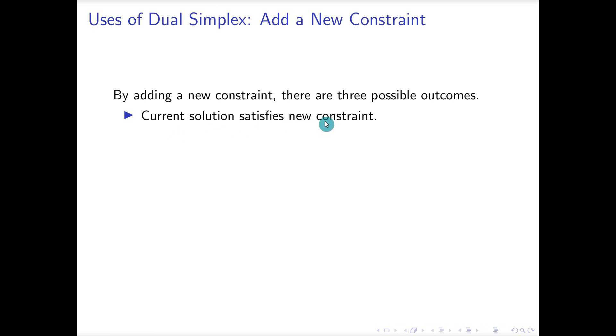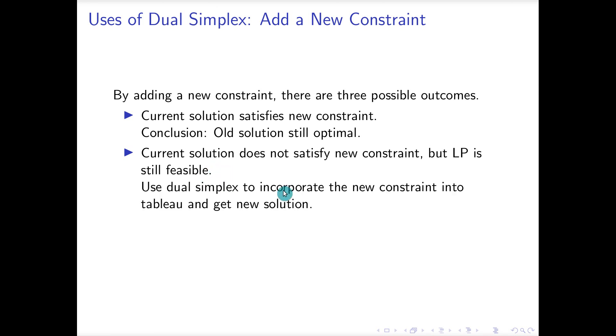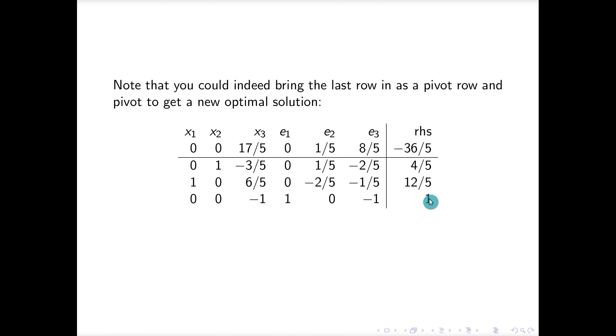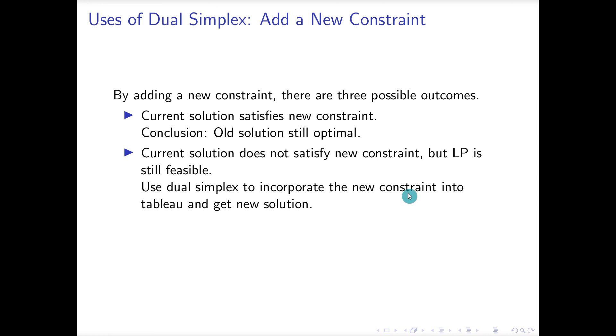By adding a new constraint there are actually several different outcomes that could happen. The current solution could satisfy the new constraint, in which case the old solution is still optimal. So I should have really checked that first before I just constructed the new line in my array, but that's okay. The current solution does not satisfy the new constraint but the LP is still feasible. This is the case that we just looked at. In that case we ended up getting a negative value on the right hand side, and then we can use the dual simplex to incorporate the new constraint into the tableau. That's what we did right here. We used the dual simplex method to make this all positive again, and in doing so we got a new solution.